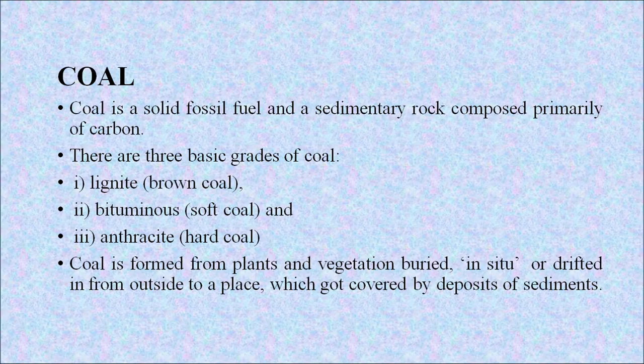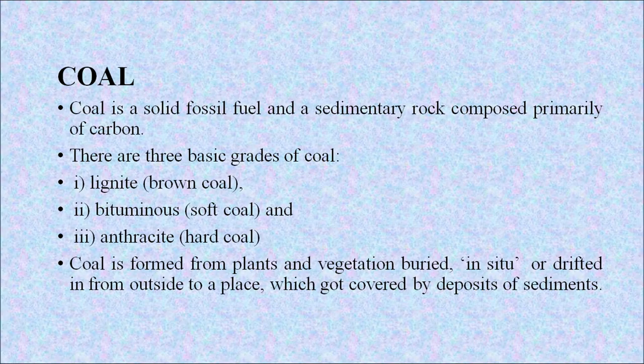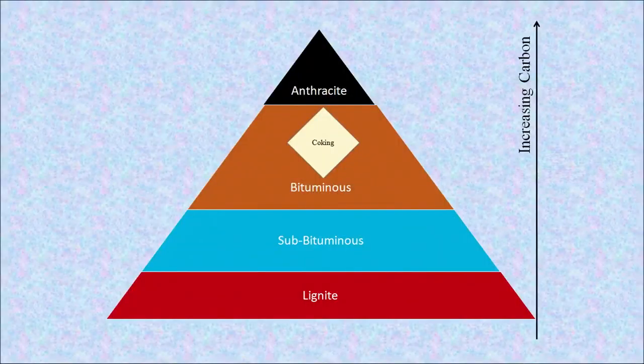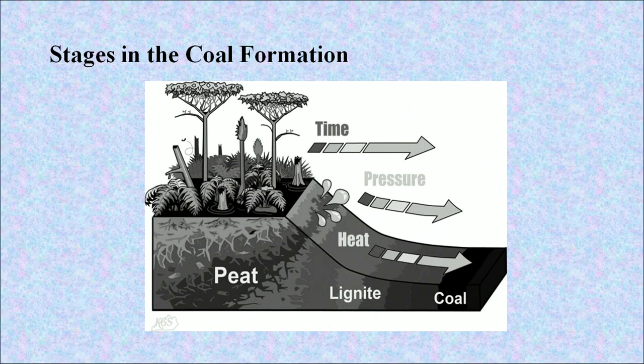Coal is a solid fossil fuel and a sedimentary rock composed primarily of carbon. There are three basic grades of coal: lignite, which is brown coal; bituminous, the soft coal; and anthracite, or hard coal. Coal is formed from plants and vegetation buried in situ or drifted in from outside, which got covered by deposits of sediments. These different forms represent increasing carbon content, formed by the effect of heat, pressure and time.